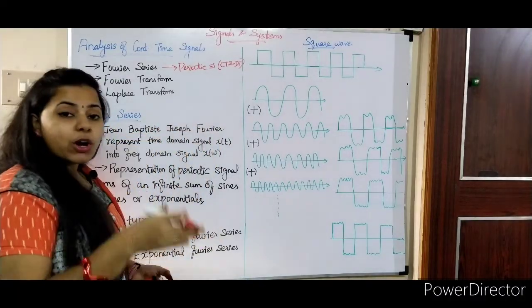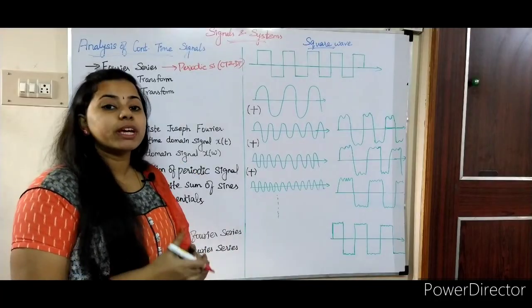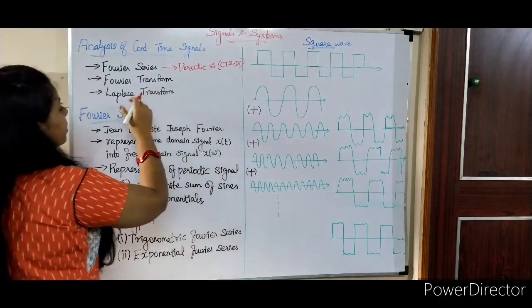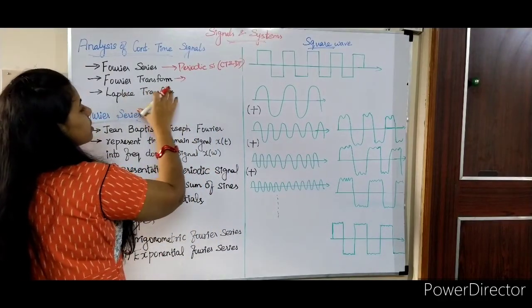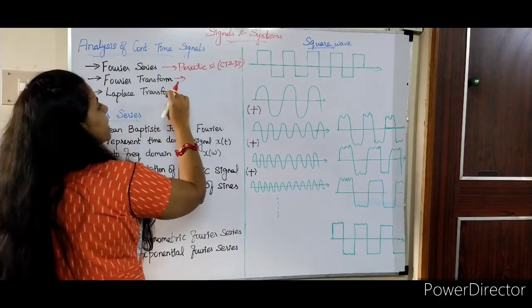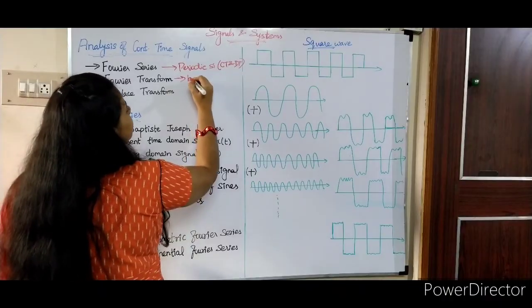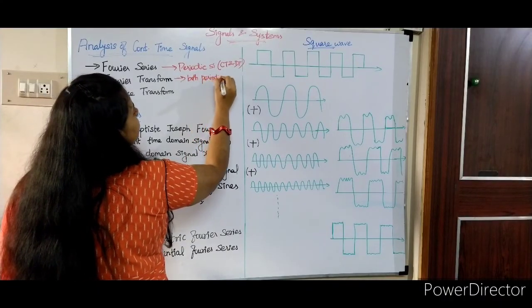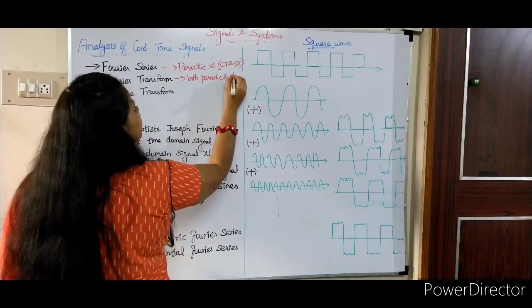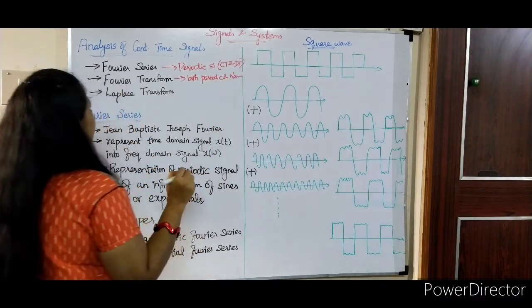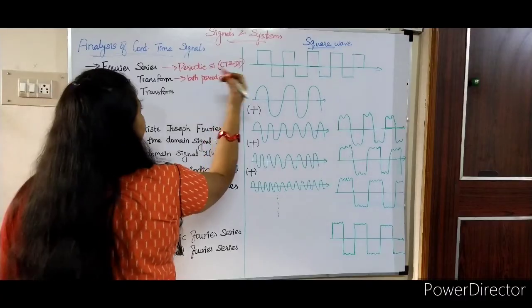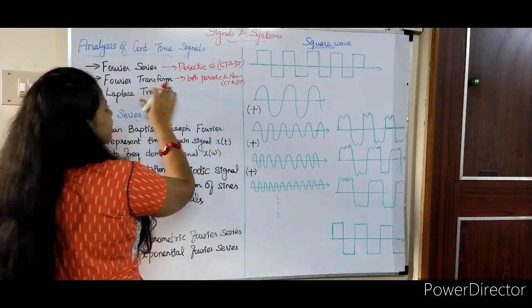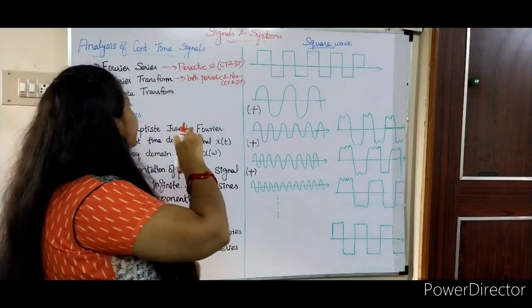But for a non-periodic signal, we cannot use Fourier series. So in that case, we have to go for Fourier transform. By using this Fourier transform, we can analyze both periodic and aperiodic signals. For the discrete case, we can use DFT — discrete Fourier transform.